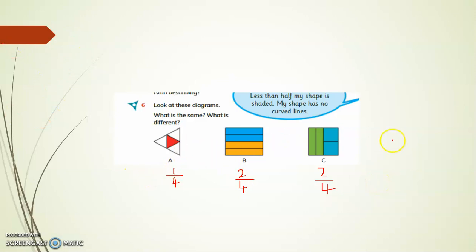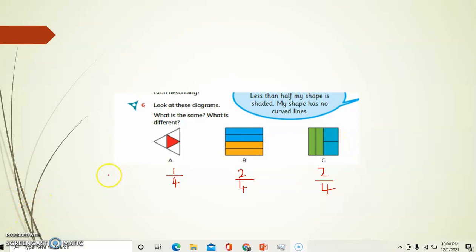All pictures are divided into four equal parts. Now, what is different? The shape that is divided is different. Here you can find a triangle, this is a rectangle, and this is a square. What is the same is the number of parts each shape is divided into, while the shape that is divided is different.